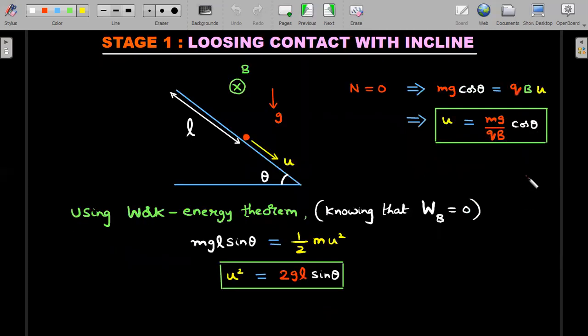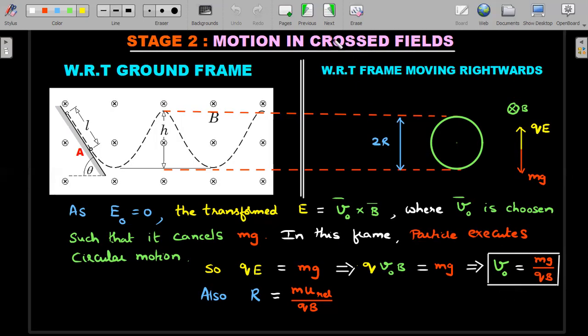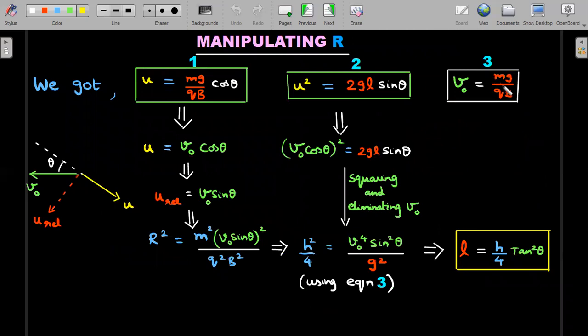Using these three important relations - the box here, the box here, and the box here - I'll borrow all three boxes into the third page and try to manipulate them. Our agenda is to eliminate all the unknowns to get the value of l.